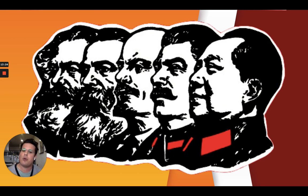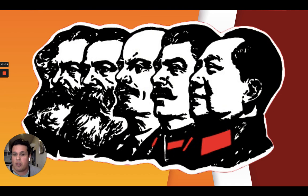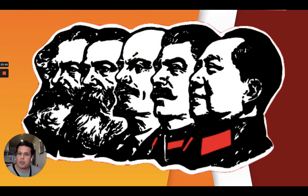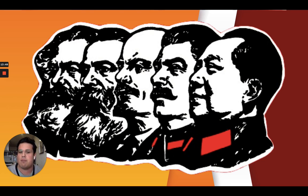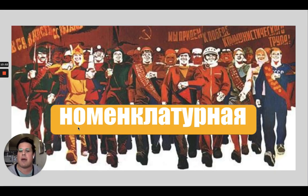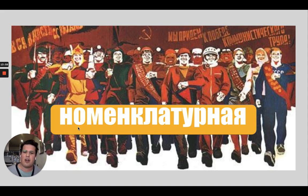Two of the most notable followers of Marx's ideas were Vladimir Ilyich Lenin and Mao Zedong. Lenin and Mao came to lead communist revolutions in Russia in 1917 and in China in 1949, respectively. Lenin, in particular, believed that the revolution could be carried out in less advanced countries if leaders constructed a vanguard of the proletariat — a small revolutionary movement that could seize power on behalf of the people who may lack the consciousness necessary to rise up.